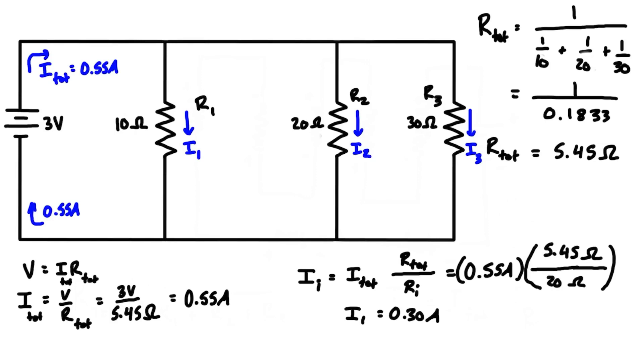We can repeat it one last time. For resistor 3, if we update this to 30 ohms, then the current flowing through resistor 3 is going to be 0.10 amps. Again, that's just 0.55 amps times 5.45 ohms divided by 30 ohms.